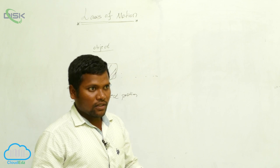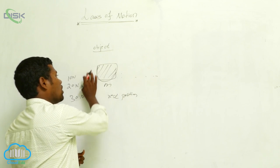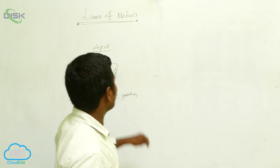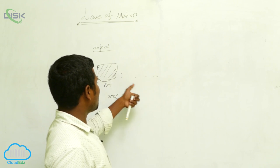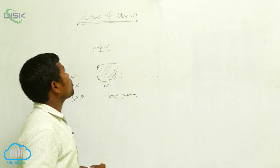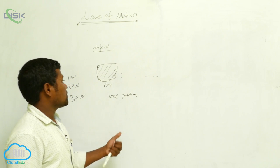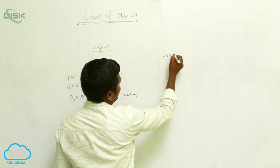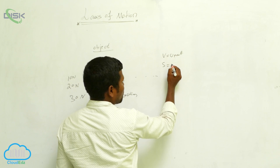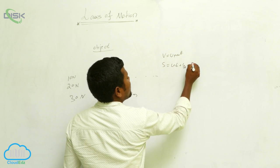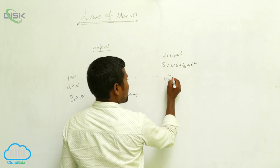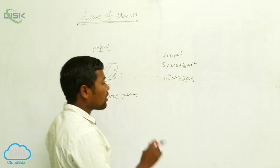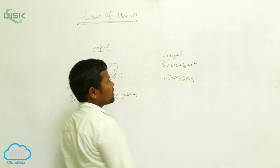When an object is in motion, it has to follow some rules. The rules that the object obeys we call the laws of motion. From these we derive equations: the first equation is v = u + at, the second is s = ut + ½at², and the third is v² - u² = 2as.